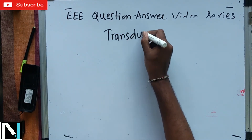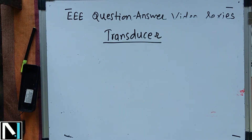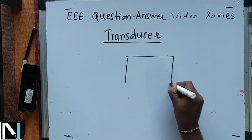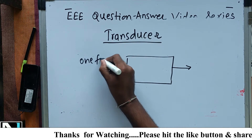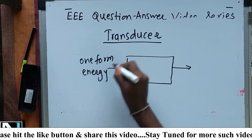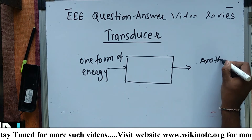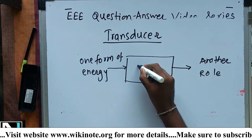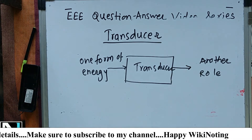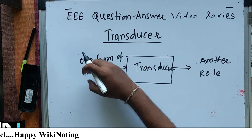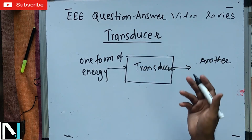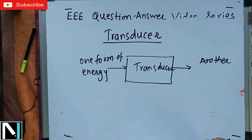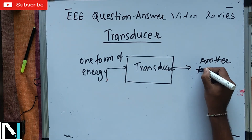Next concept is transducer. Most people get confused between transducer and sensor, but the basic difference is clear: the role of a transducer is to convert one form of energy into another form of energy. In the case of a sensor, physical quantities are converted into electrical quantities, but in the case of a transducer, one form of energy is converted into another form of energy.